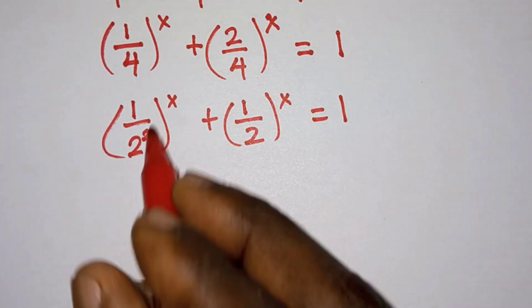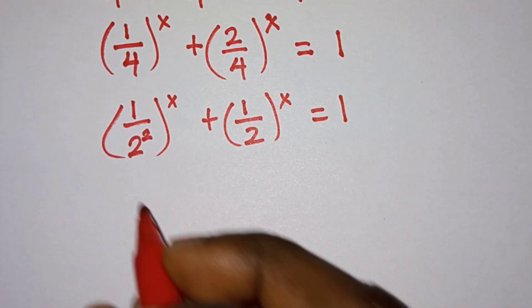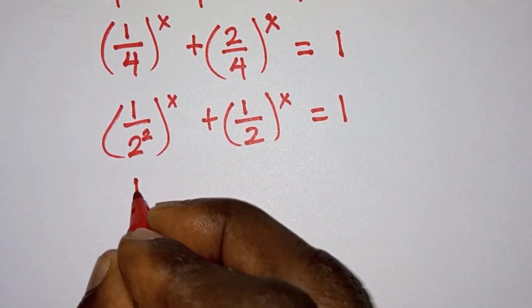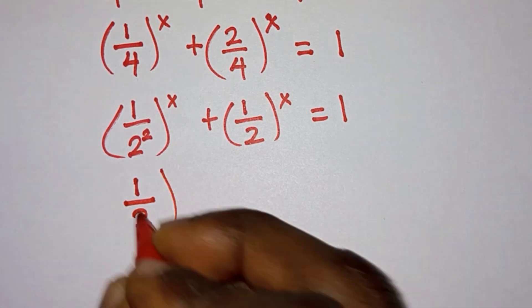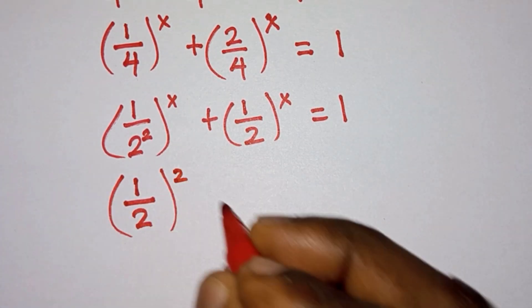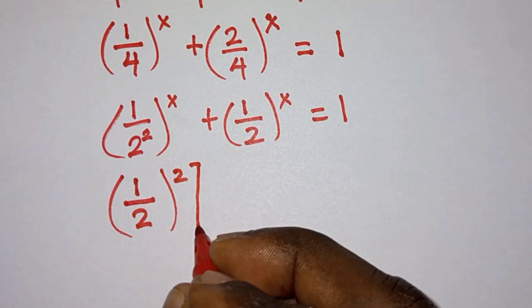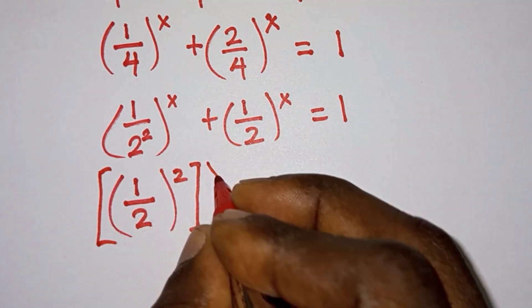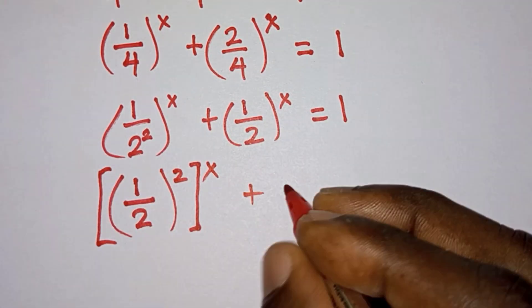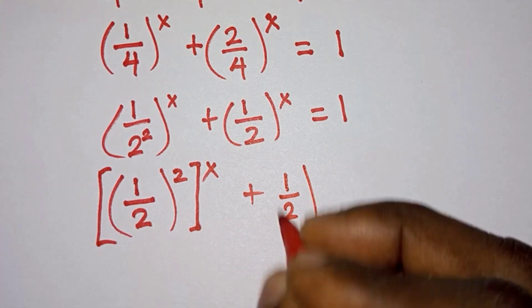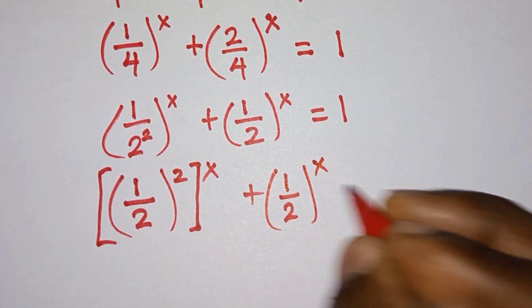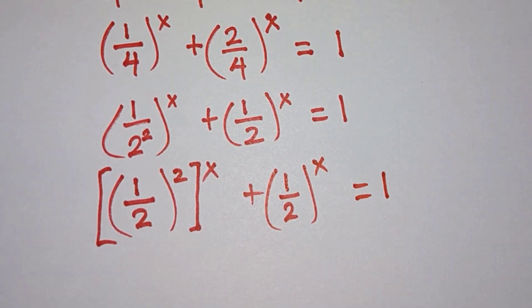Now let's pay attention to this term over here. We can write this as (1/2)^2 to the power x, then plus (1/2)^x, and the right side we have 1.